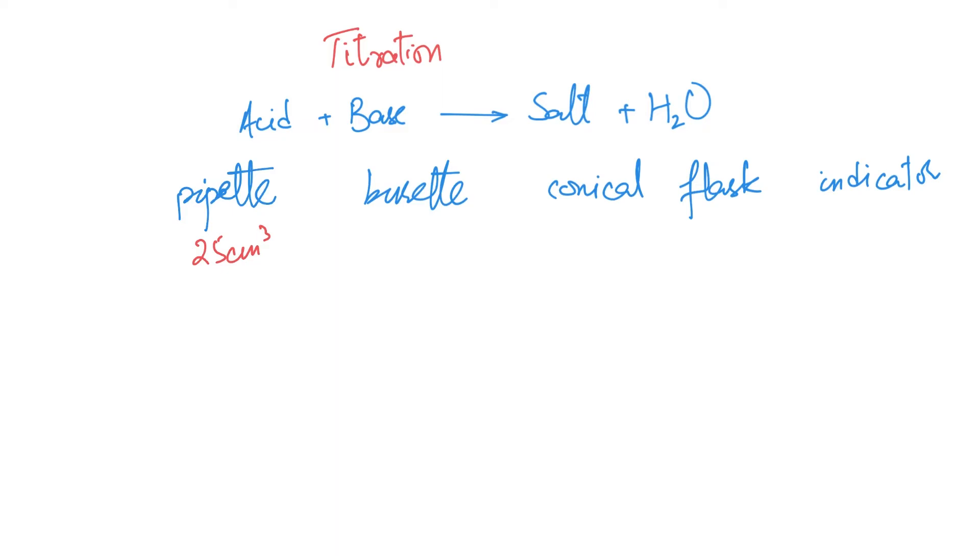In a burette, you do not know what volume to add, but a burette measures how much volume has been taken out. That is why a burette usually starts at zero and ends at whatever the total volume is, and it has a tap at the bottom, because this tap allows us to control how much of the liquid goes out of the burette.